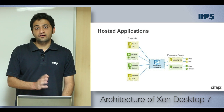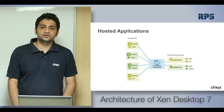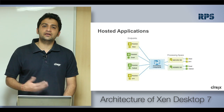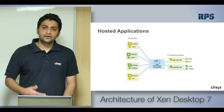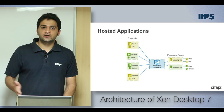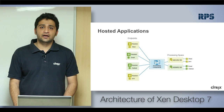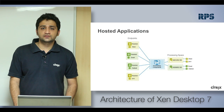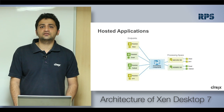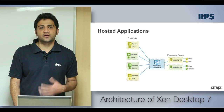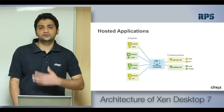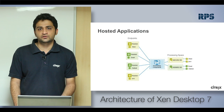XenDesktop 5, the previous version, used to handle only client operating systems. Citrix then came up with XenDesktop 7, which can handle client operating systems as well as server operating systems, so you can publish your applications as well as your desktops from a single product.